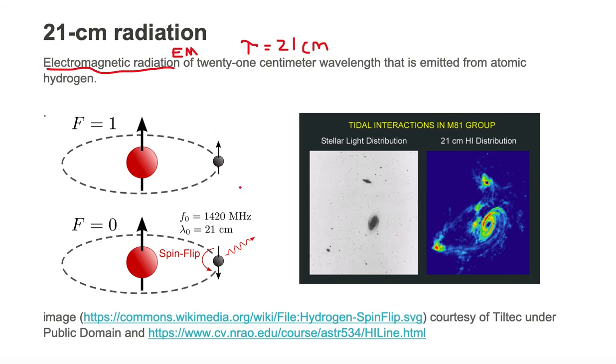When the electron spontaneously flips or it does a spin flip, it releases this wavelength of light and that wavelength of light has a peak-to-peak length that is exactly 21 centimeters. So we call that 21 centimeter radiation.